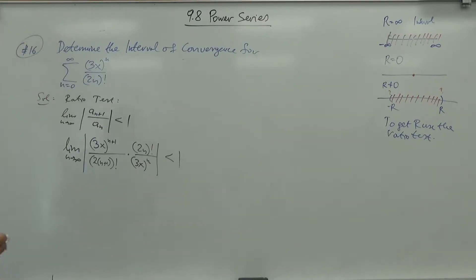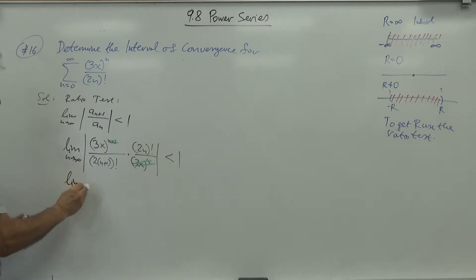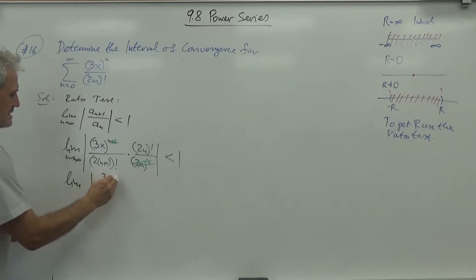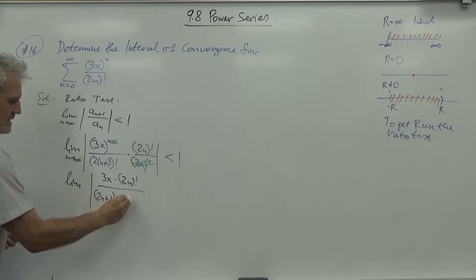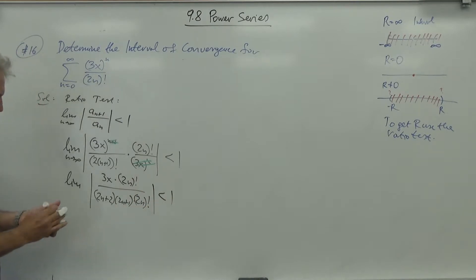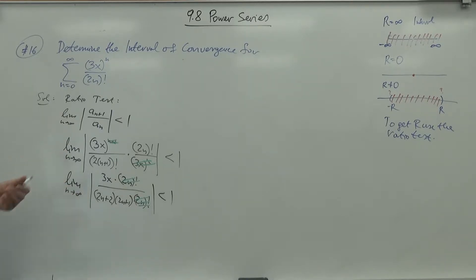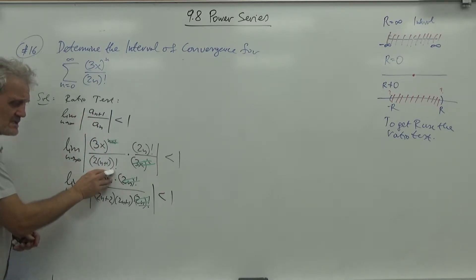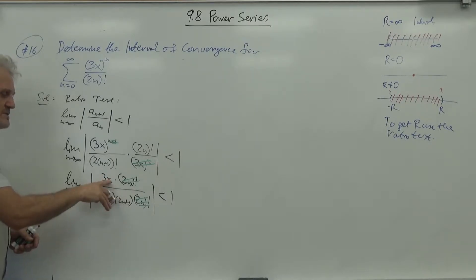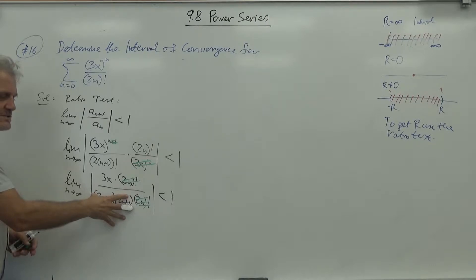The powers of 3x cancel, leaving one factor. The factorial (2n+2)! expands as (2n+2)(2n+1)(2n)!, and the (2n)! factors cancel. So we are left with the absolute value of 3x divided by (2n+2)(2n+1). No matter what value x takes — whether 10, 50, or a million — x is a fixed constant, and the denominator goes to infinity. So this limit is 0 for any x.